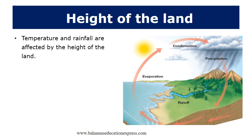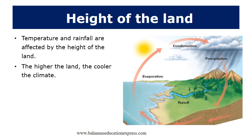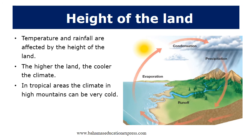Temperatures and rainfall are affected by the height of the land. The higher the land, the cooler the climate. In tropical areas, the climate in the high mountains could be very cold.